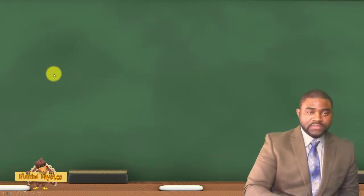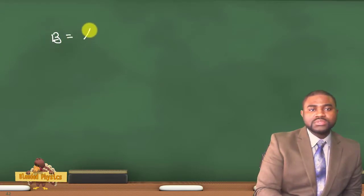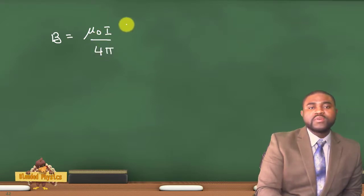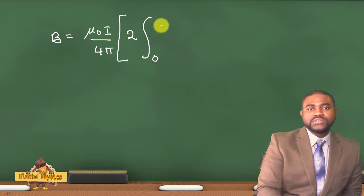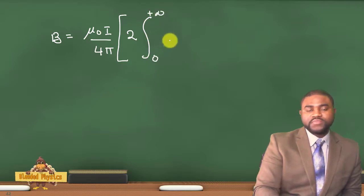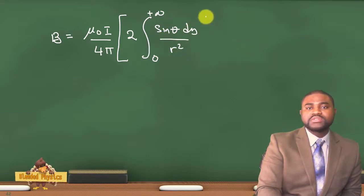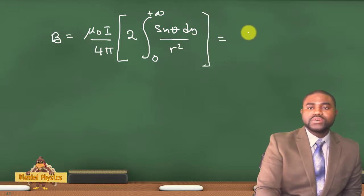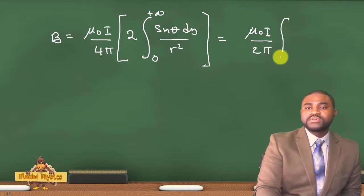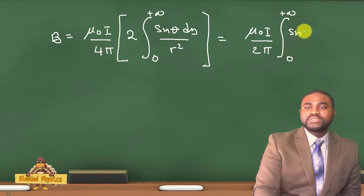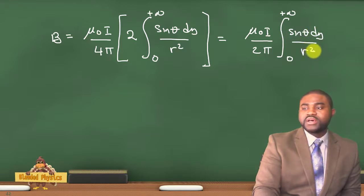So this means that B will be equal to μ₀I over 4π, bracket 2 times the integral from 0 to positive infinity of sinθ dy all divided by r squared, which is equal to μ₀I divided by 2π, times the integral from 0 to positive infinity of sinθ dy all divided by r squared.